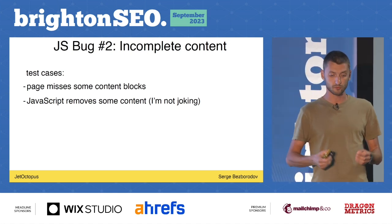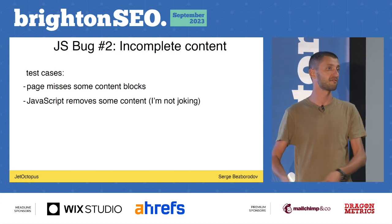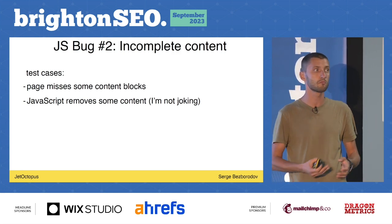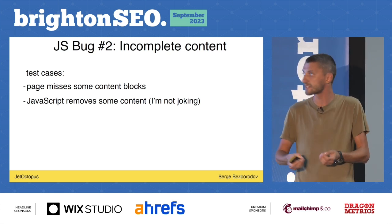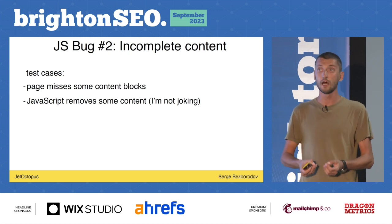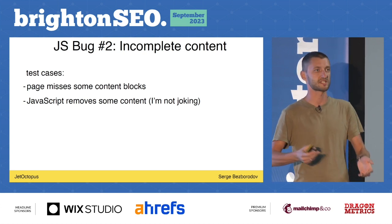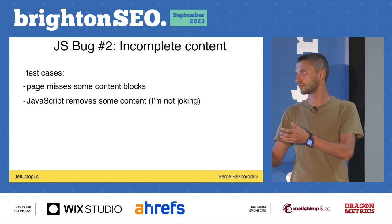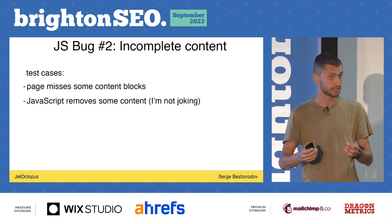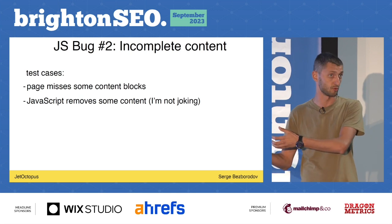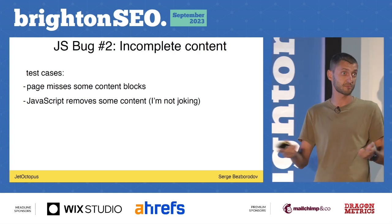We go into a second step: incomplete content. Your page loaded very fast, everything looks fine — you see footer, menu — but you realize an internal linking block is missing on your product pages. That's critical. Another type: you realize you have an internal link block in your crawler like Screaming Frog, but in reality it doesn't exist on the page because JavaScript removed it. I'm not joking — I saw this situation. Simply after executing JavaScript, your internal linking is missing.